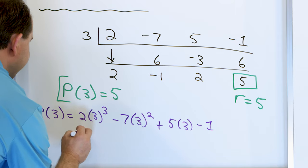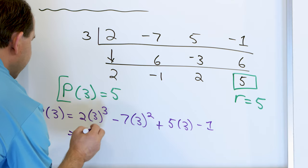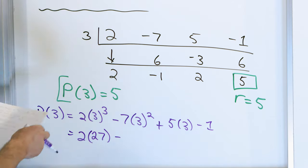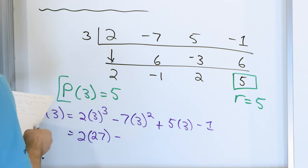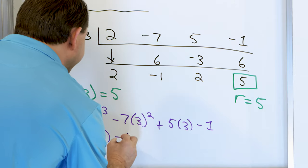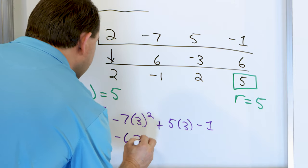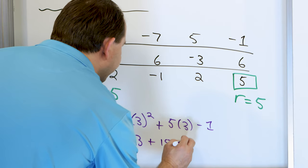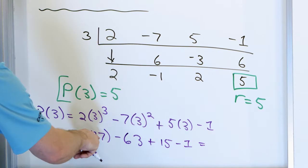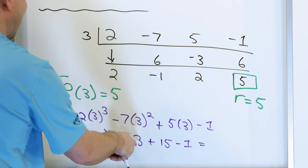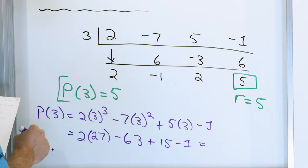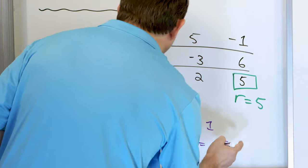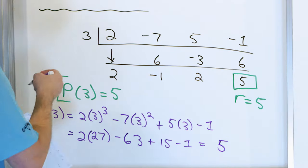So what we have is 2 times 3 cubed, which is 27. Then 3 squared is 9, and 9 times 7 is 63. Then 5 times 3 is 15, minus 1. If you crank through this — 2 times 27, subtract the 63, add the other terms — you're going to get 5, which is exactly what we predicted.